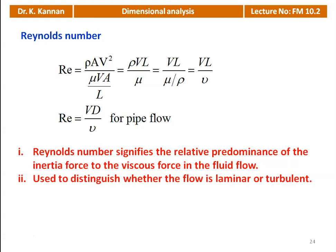Reynolds number signifies the relative predominance of inertia force to viscous force in fluid flow. It is used to distinguish whether the flow is laminar or turbulent. For pipe flow, when Reynolds number is less than 2000, the flow is laminar; if greater than 2000, the flow is considered turbulent.